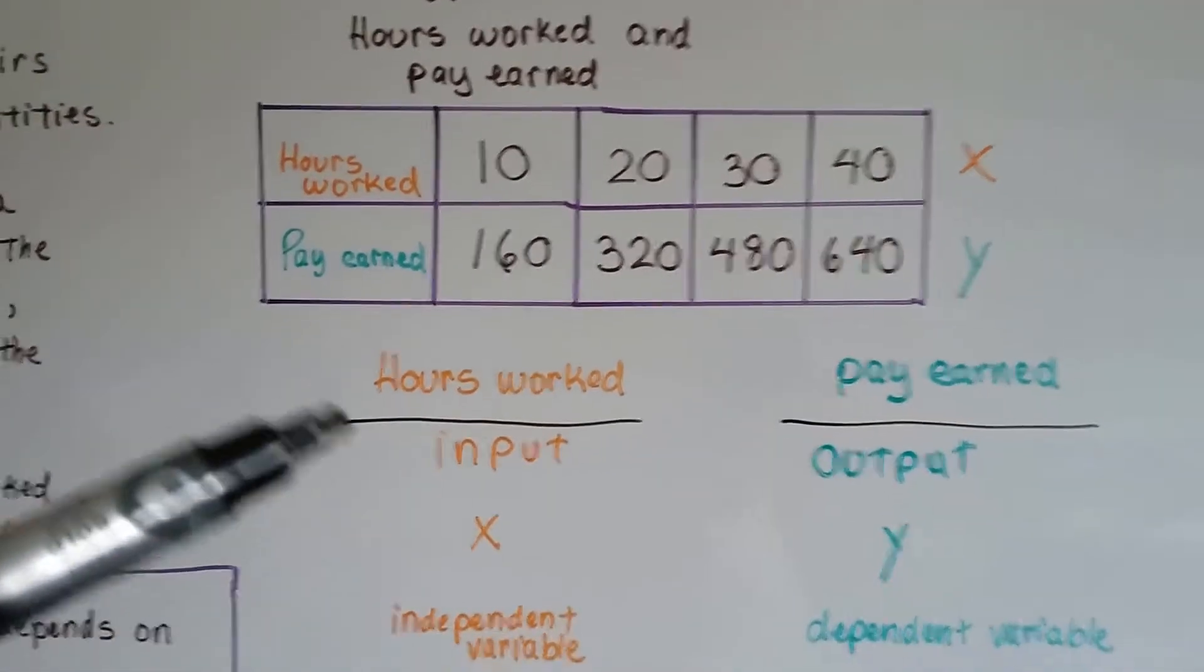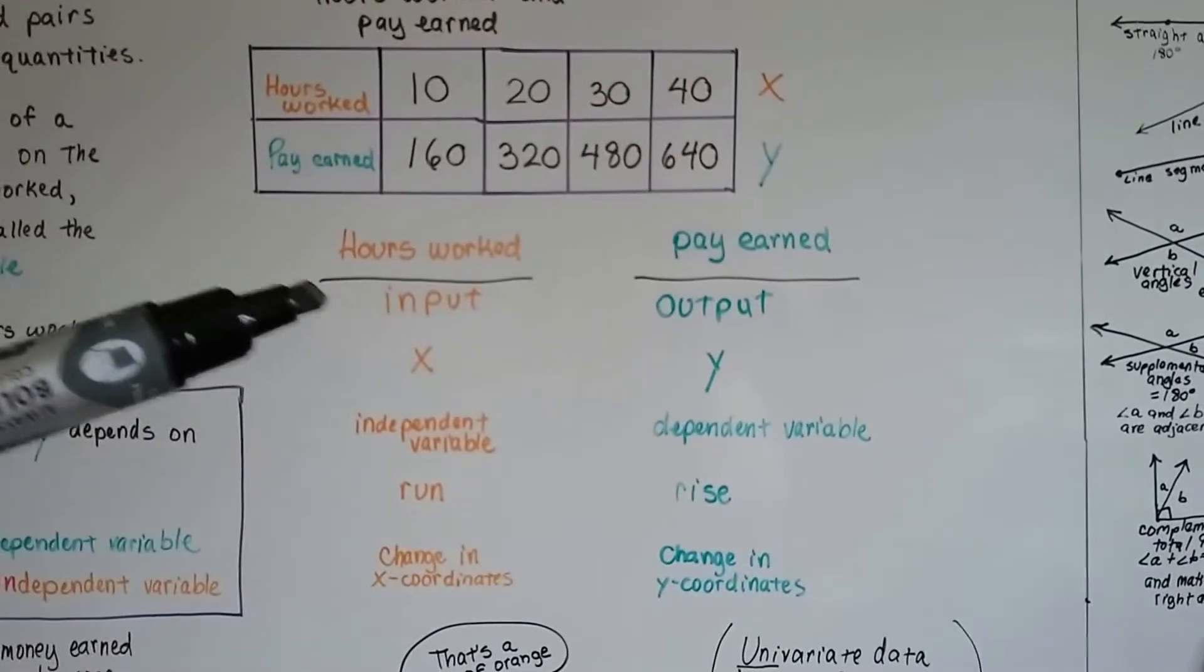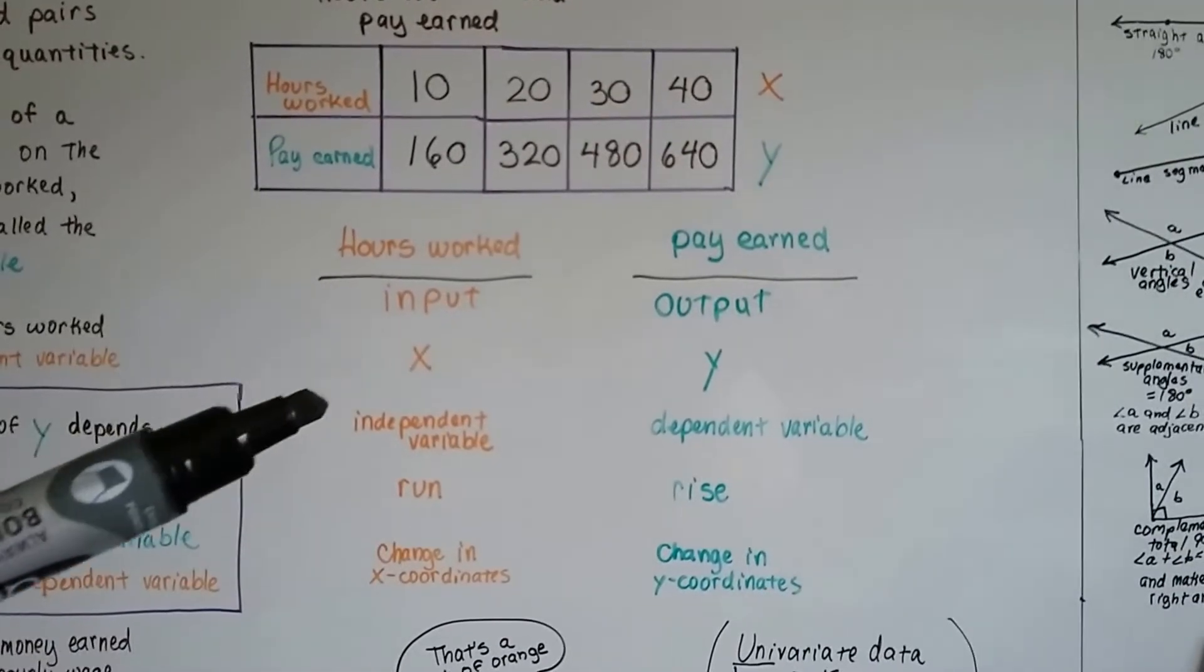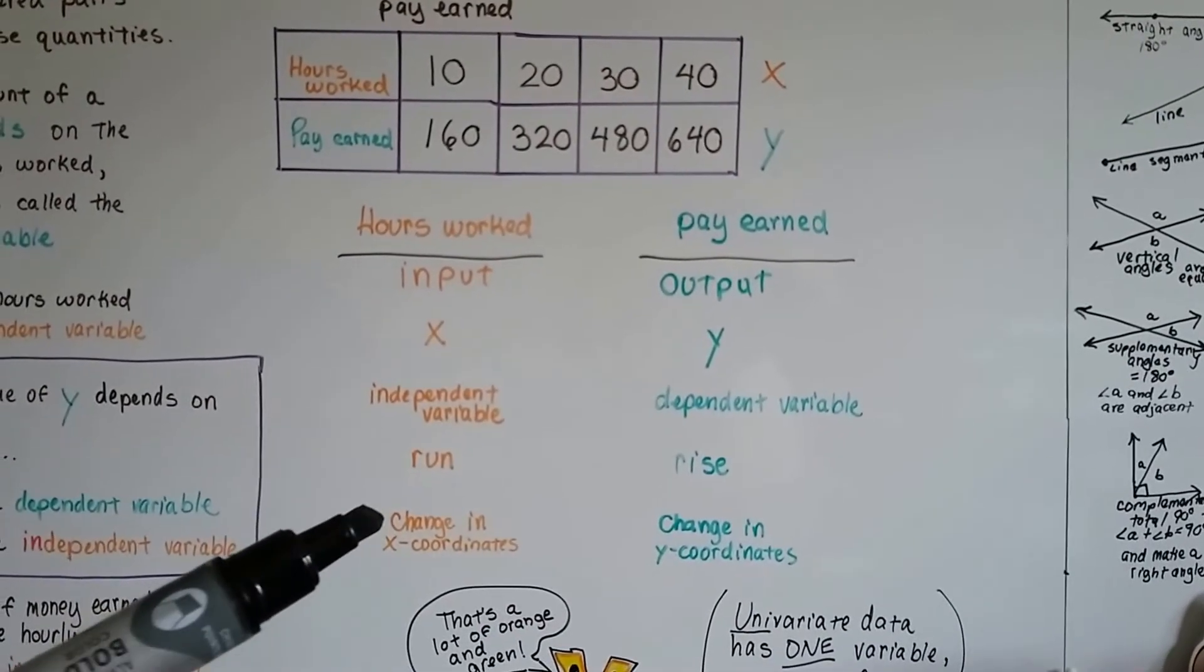So the hours worked. We'll see all our orange and greens here. The hours worked is the input. It's the x. It's the independent variable. It's the run. It's the change in x coordinates.